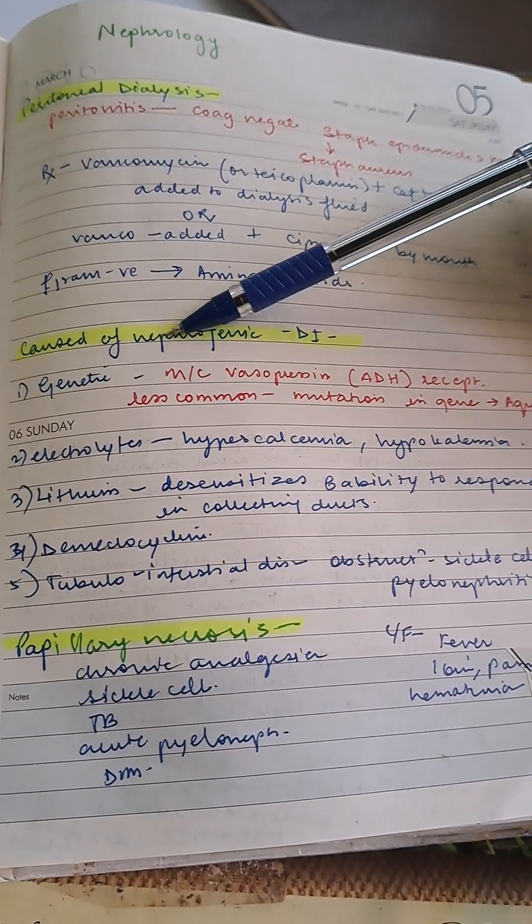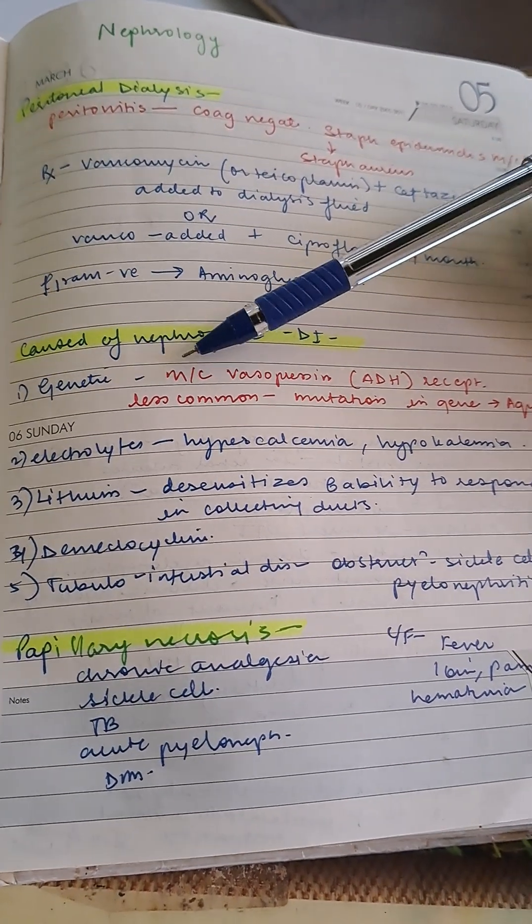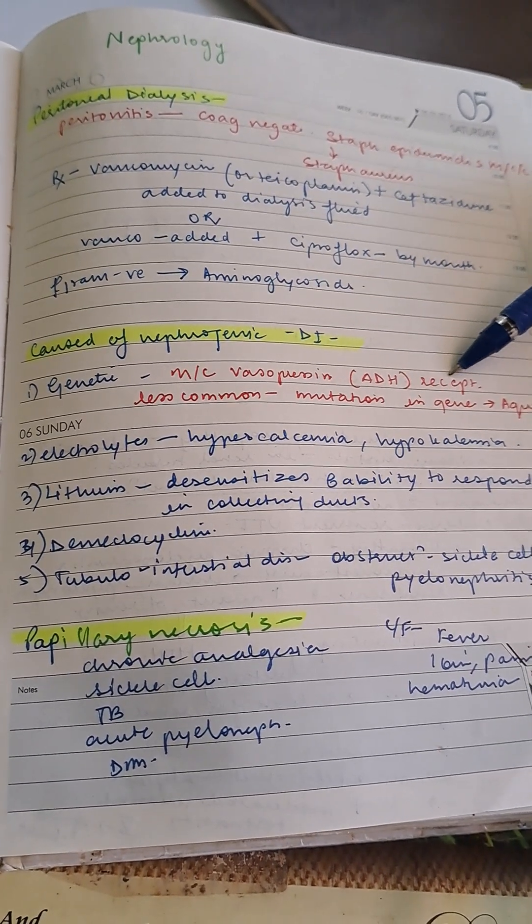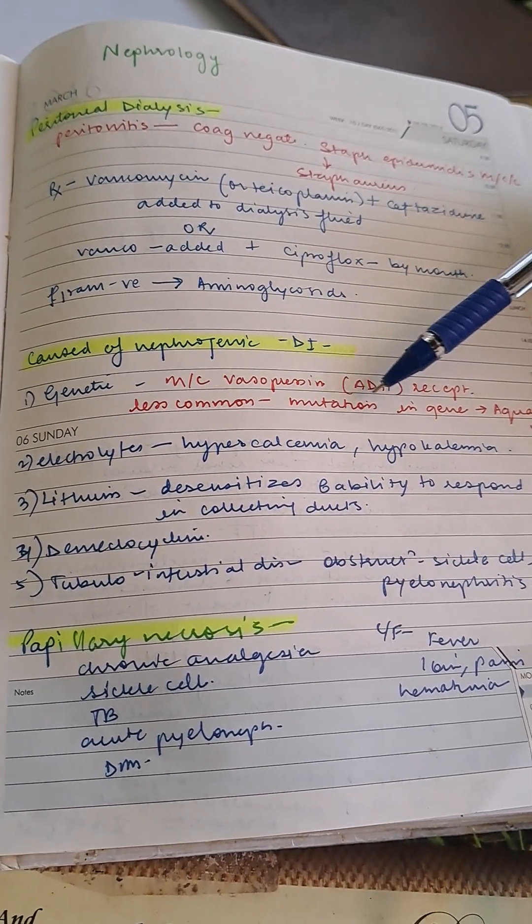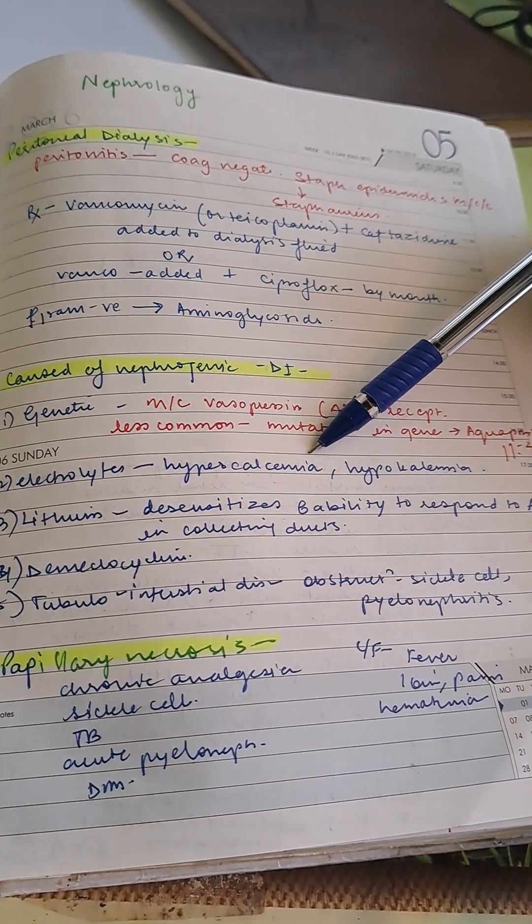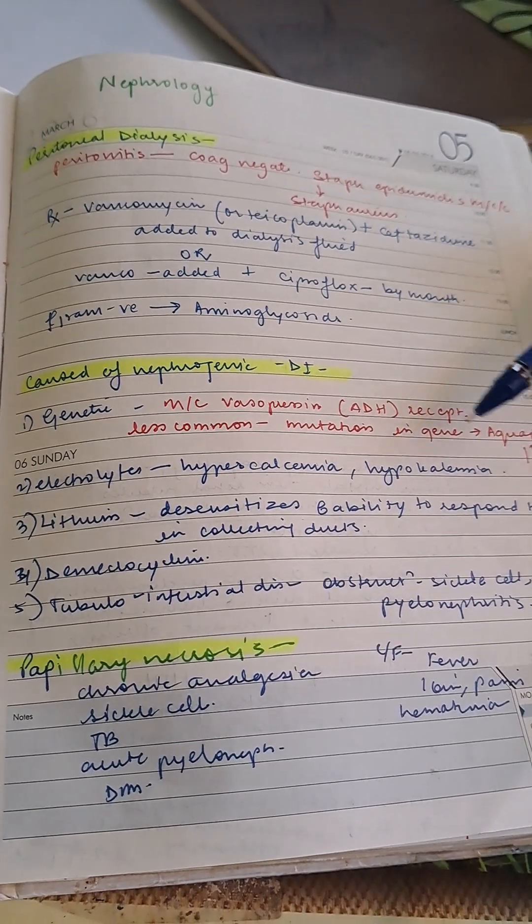Causes of nephrogenic diabetes insipidus: Genetic causes are most common, including vasopressin ADH receptor mutations. Less common is mutation in gene aquaporin 2. Electrolyte causes include hypercalcemia and hypokalemia.